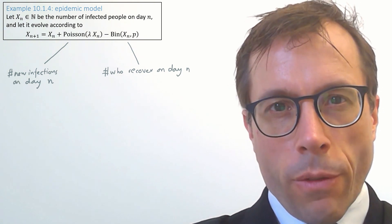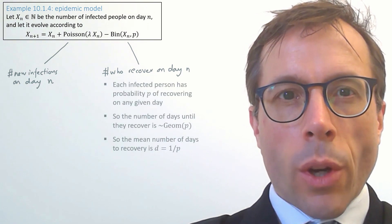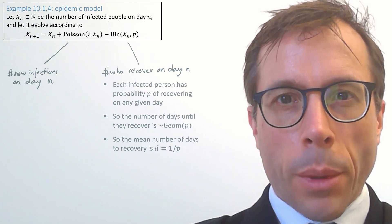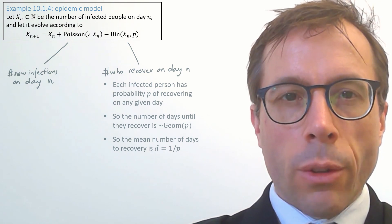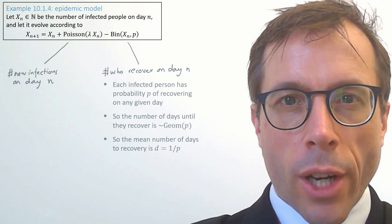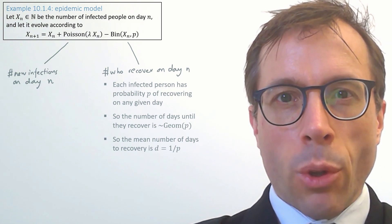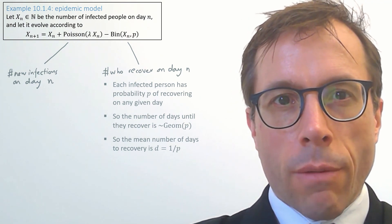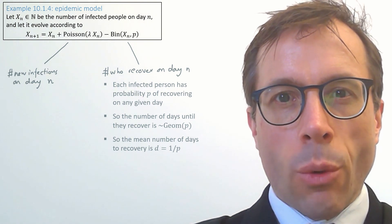Let's look at the recovery term first, the binomial variable with parameters xn and p. In other words, on a given day, each person recovers with probability p. If we look at it from the perspective of a single infected person, each day they have probability p of recovering, or in other words, the time until they recover is a geometric random variable with parameter p. And if we look up on Wikipedia to find the mean of the geometric, we learn that the average number of days until recovery is 1/p.